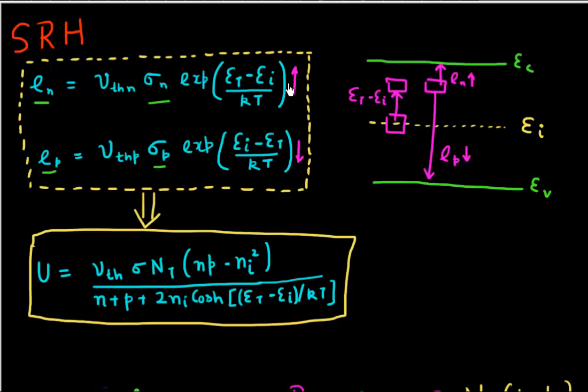And so these equations look like they're making some sense. Similarly, this equation is saying that if I had a trap level near the middle of the band, and if I move it close to the valence band, then I get EI minus ET to be positive. And what it's saying is, in that case, my emission for holes would become easier. At the same time, my emission for electrons would become harder.